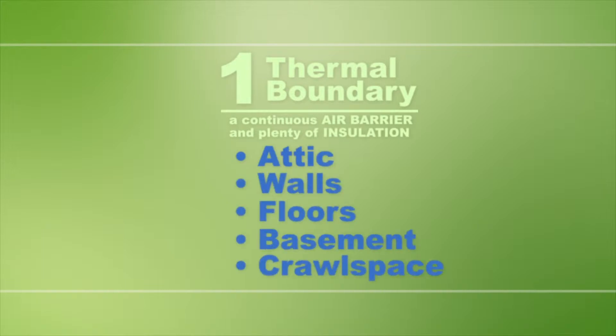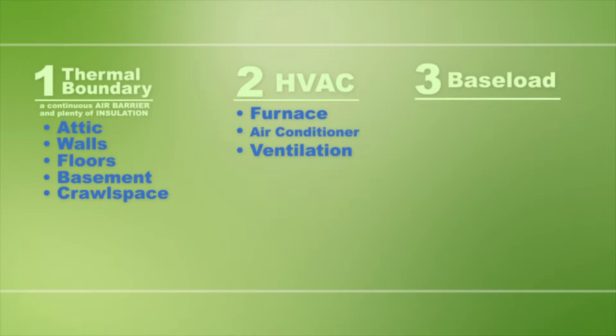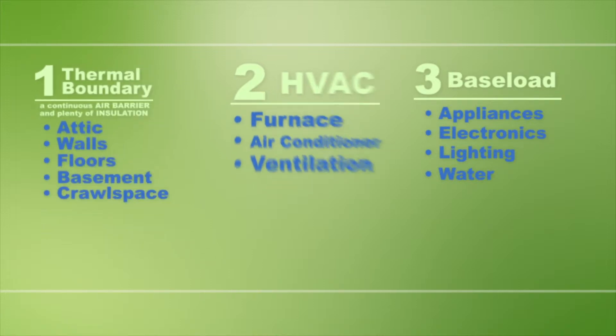The thermal boundary consists of a continuous air barrier and plenty of insulation. HVAC equipment includes the furnace, air conditioner, and ventilation. The baseload items include the appliances, electronics, lighting, and water. Everything that impacts the home's energy efficiency can be neatly put into one of these three categories. It really is that simple.